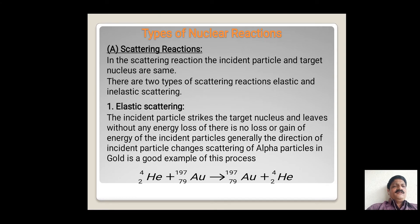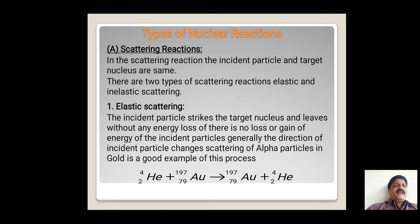The nuclear reaction can be represented as: Au (gold) with helium as the alpha particle incident on the gold foil — there is no loss or gain of energy of the incident particle as well as the target nucleus.